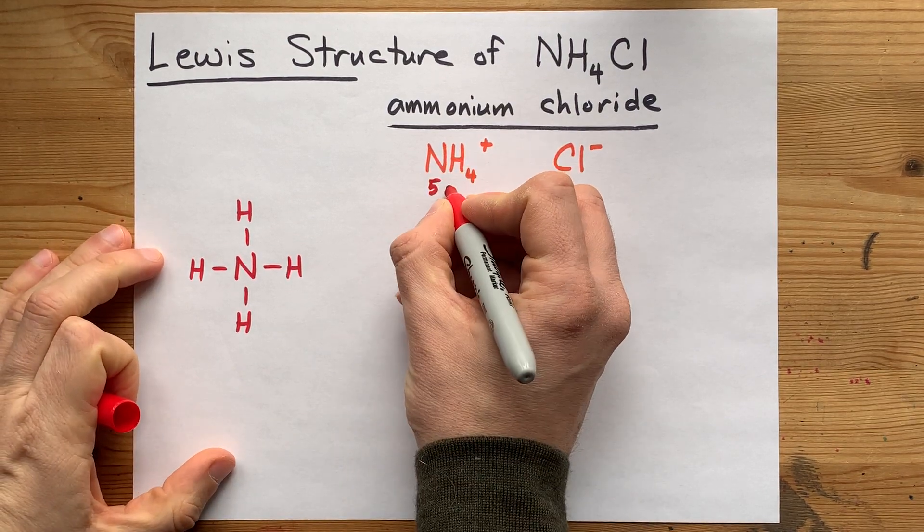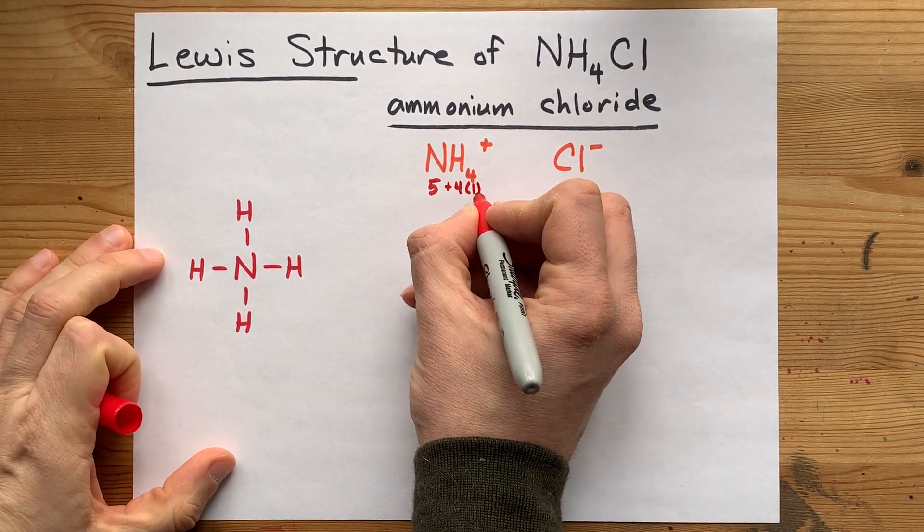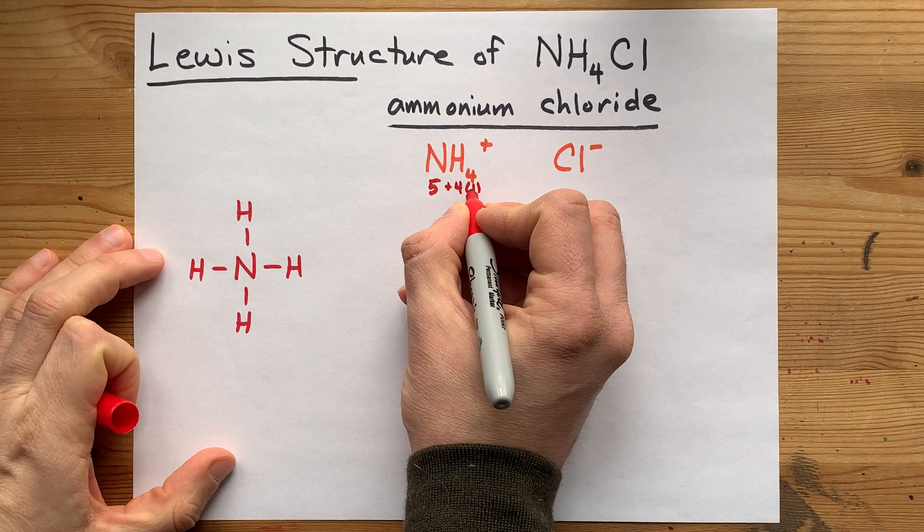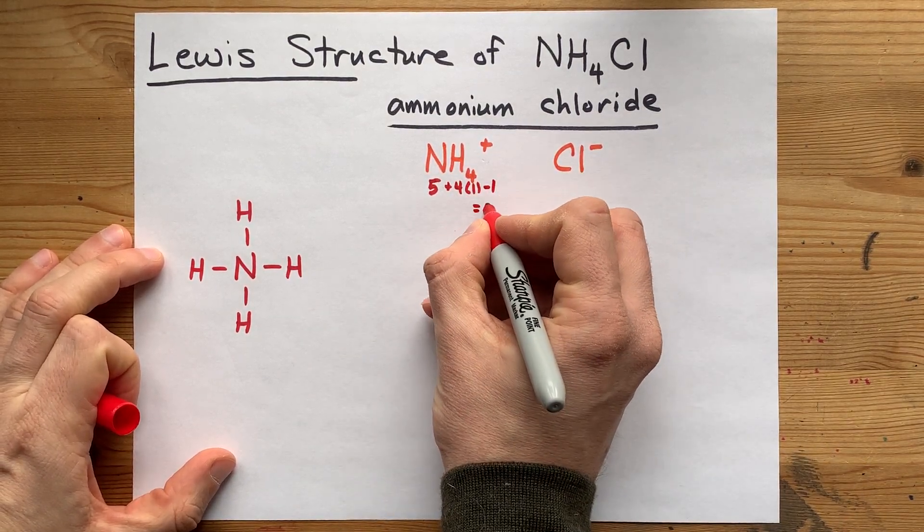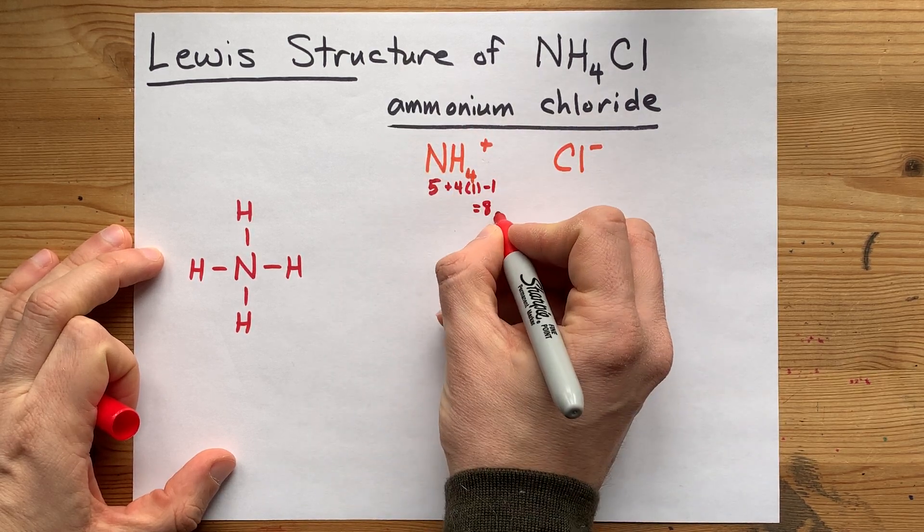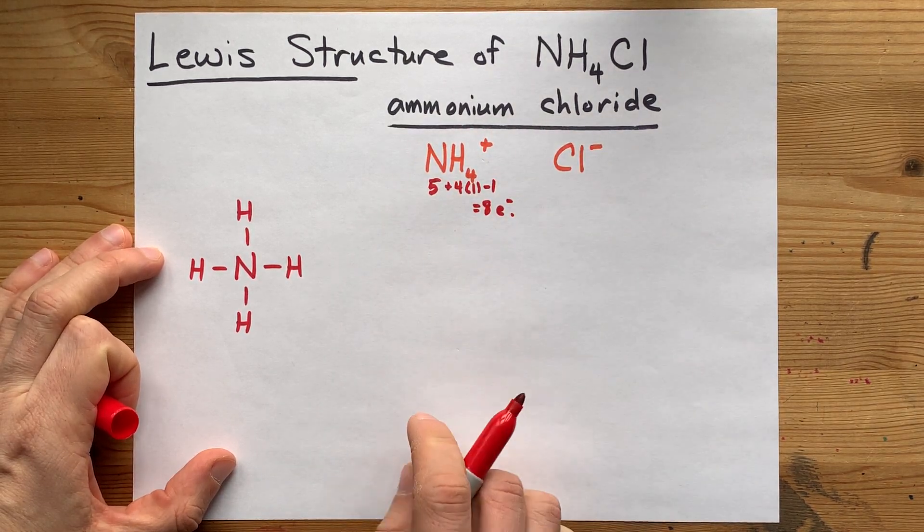So nitrogen brings five. I have four hydrogens, each bringing one. That's nine. But the positive charge means that it lost an electron as well, which means that this entity needs to have eight electrons total.